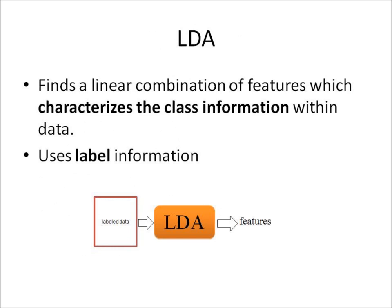If we know the class labels of the data, we use LDA to get the class-specific information. LDA finds a linear combination of features which characterizes the class information within data. It needs label information in doing that.